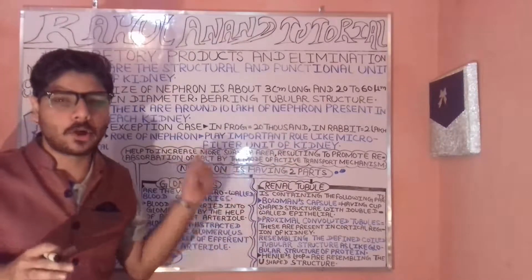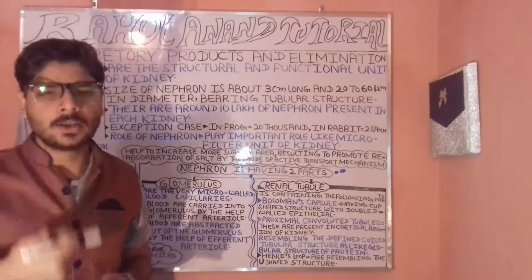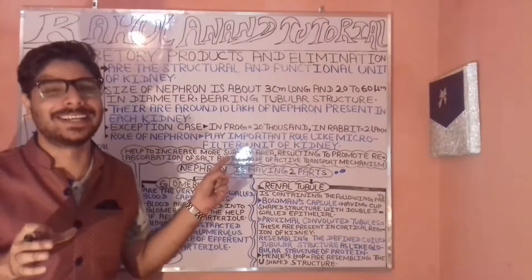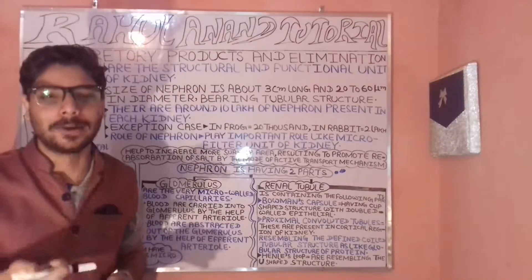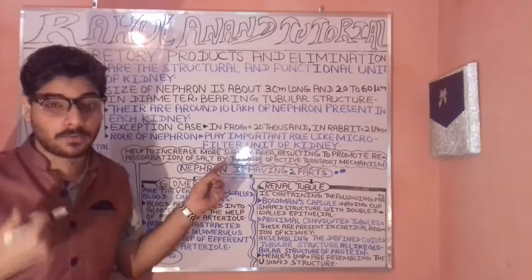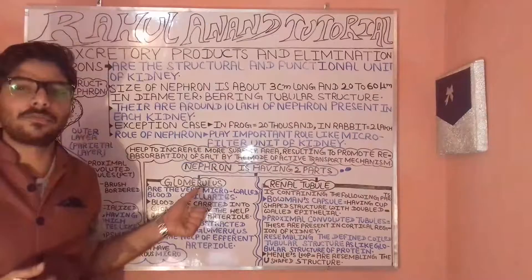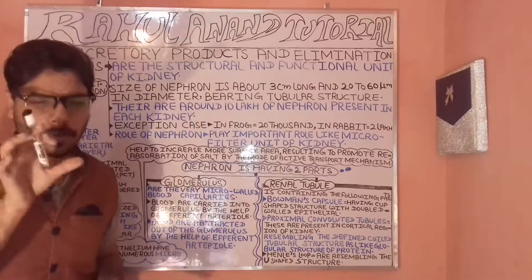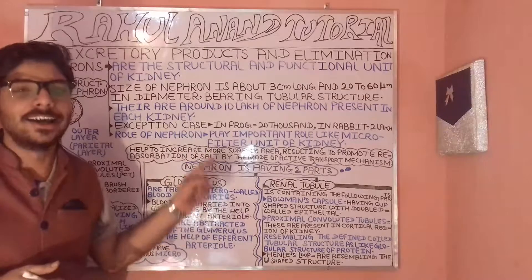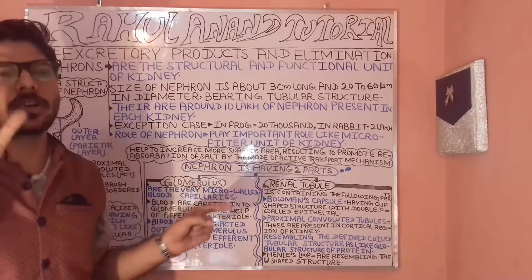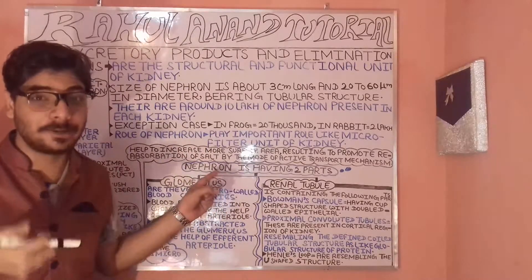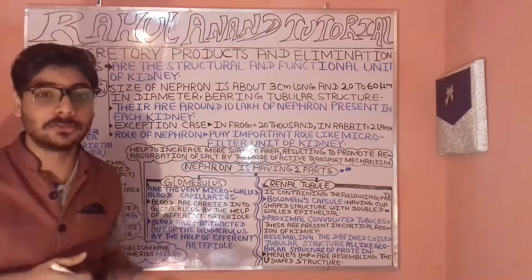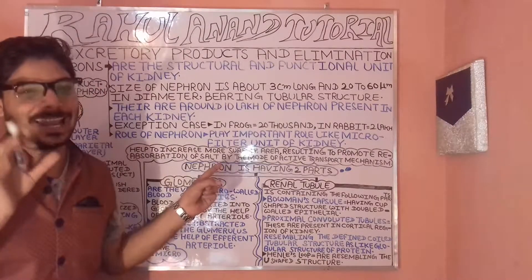In the human kidney, there are around how many nephrons? In the human body, each kidney contains approximately 10 lakh (1 million) nephrons.